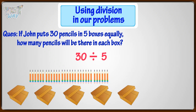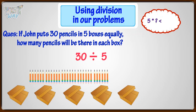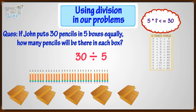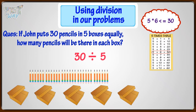The quickest way is to just think: how many times can 5 go into the number 30? Think — 5 multiplied by what is less than or equal to 30? We get 5 times 6 equals 30.